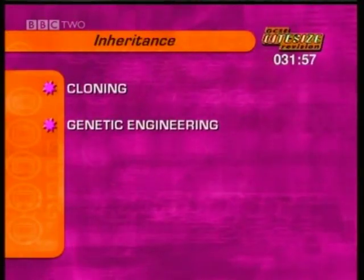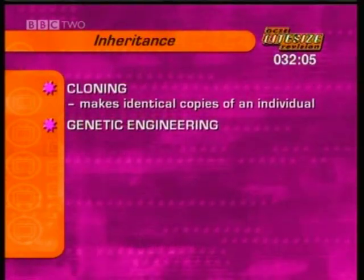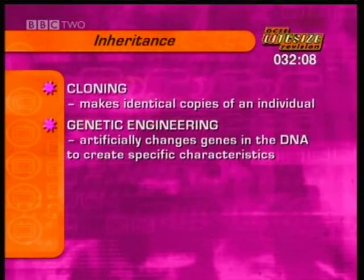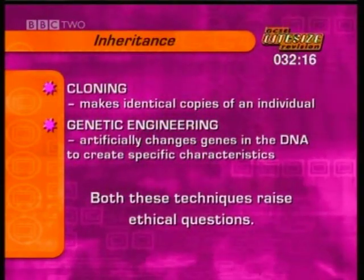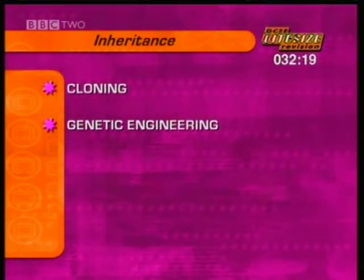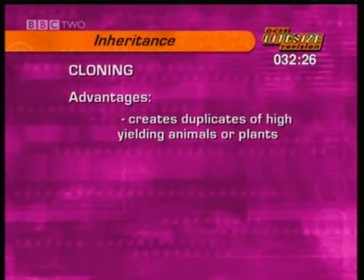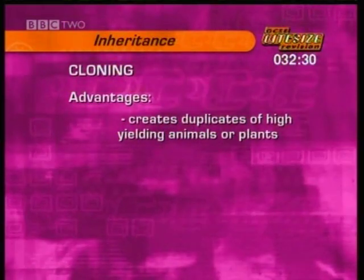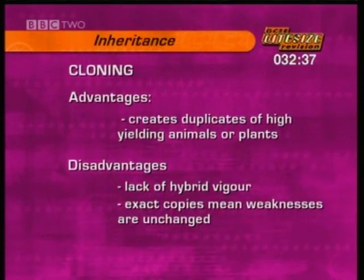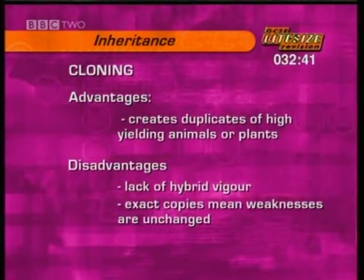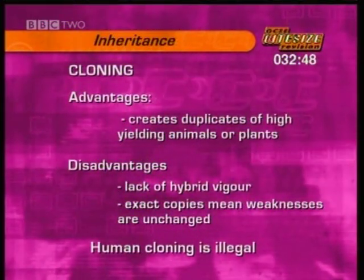In recent years there's been a massive leap forward in our understanding of genetics. Cloning is the process of making identical copies of an individual. Genetic engineering is artificially changing the genes in the DNA to create specific proteins and therefore specific characteristics. Both these techniques raise ethical issues. Some advantages of cloning are that it creates duplicate animals or plants with advantageous characteristics, such as high yields. Some disadvantages include lack of hybrid vigour, because exact copies of organisms means any weakness remains unchanged. At the moment, even if it were possible, attempting to clone duplicate human beings is illegal.